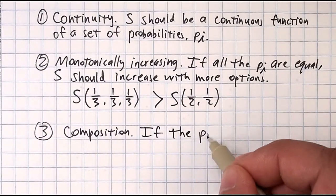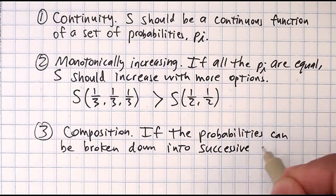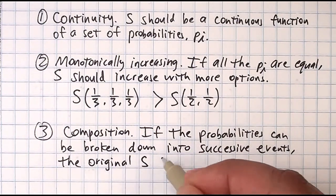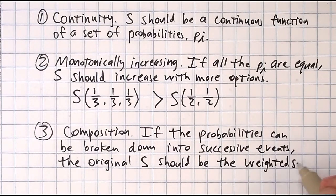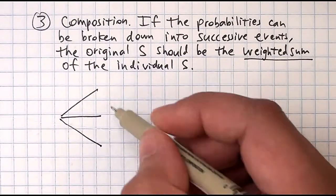Number three, composition. If you break a set of probabilities up into successive events, you should be able to recover the original uncertainty from a weighted sum of the individual uncertainties.